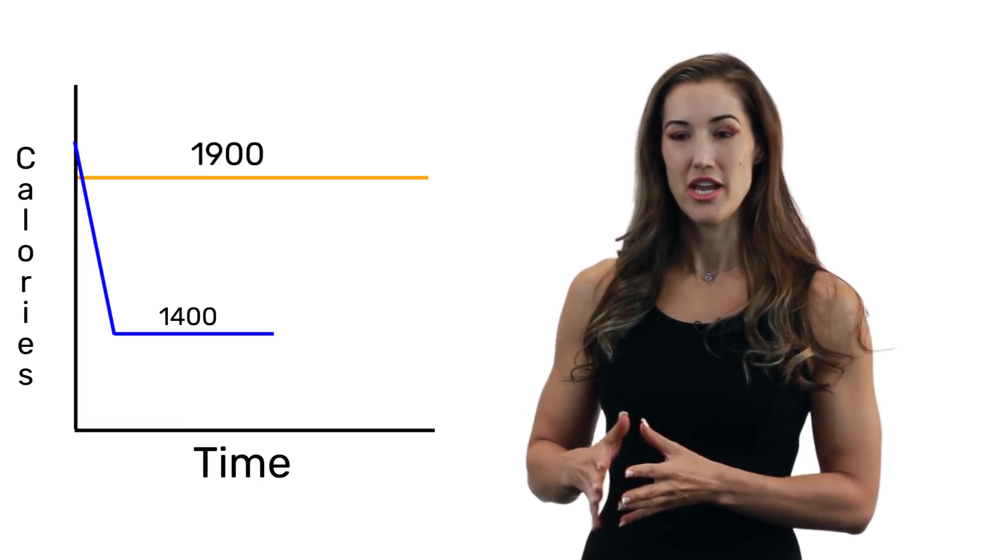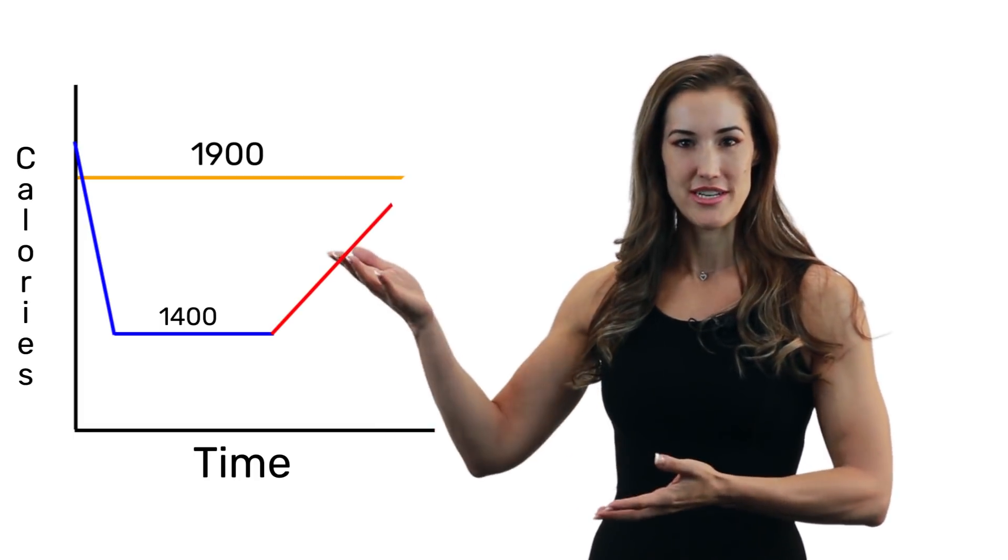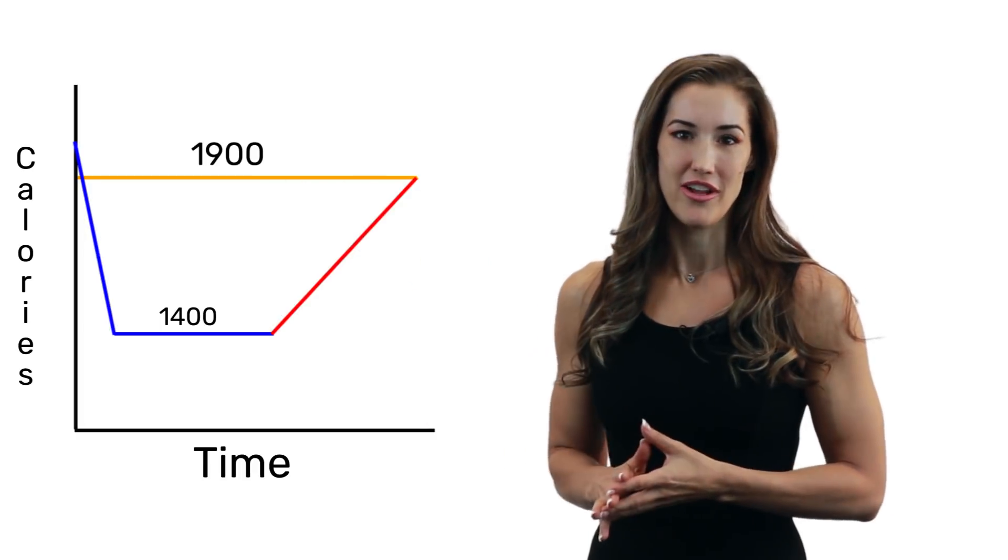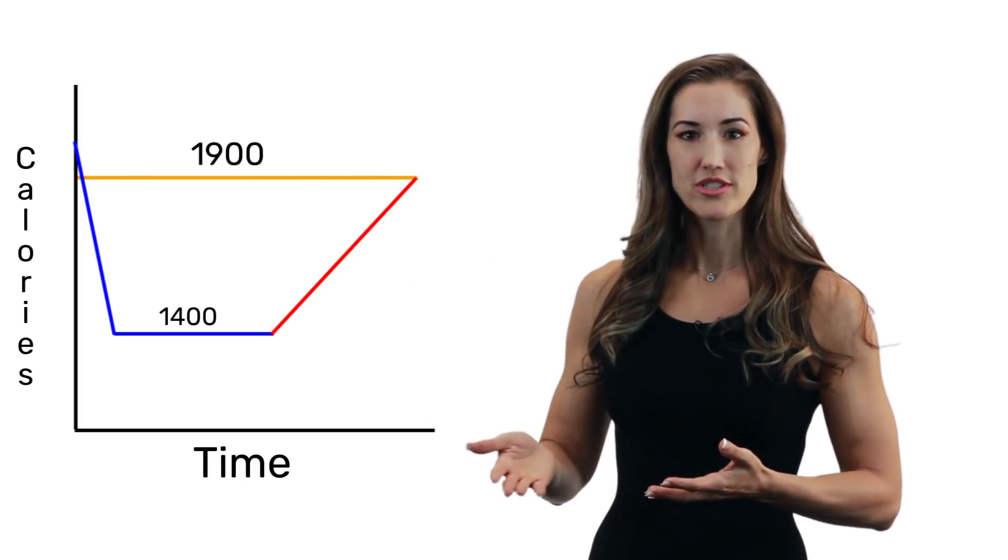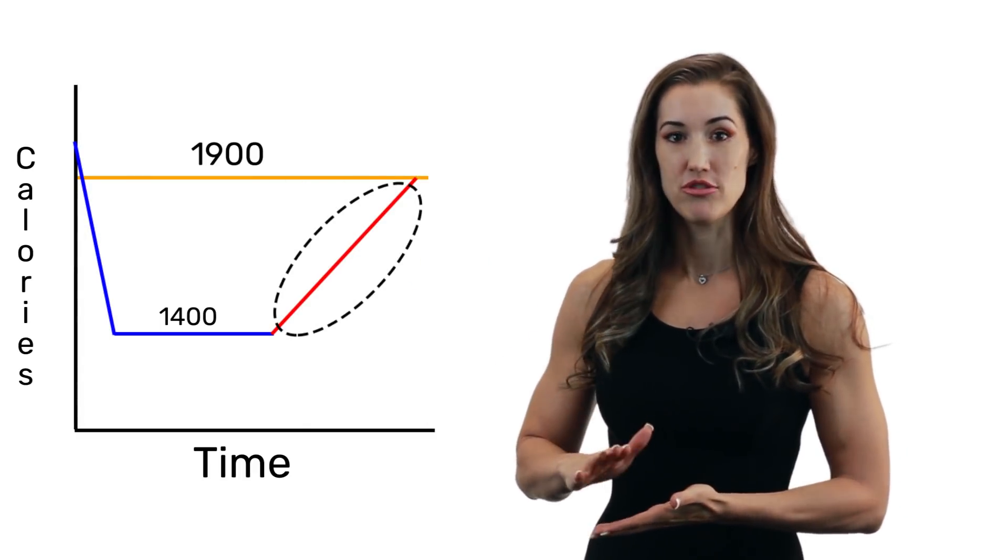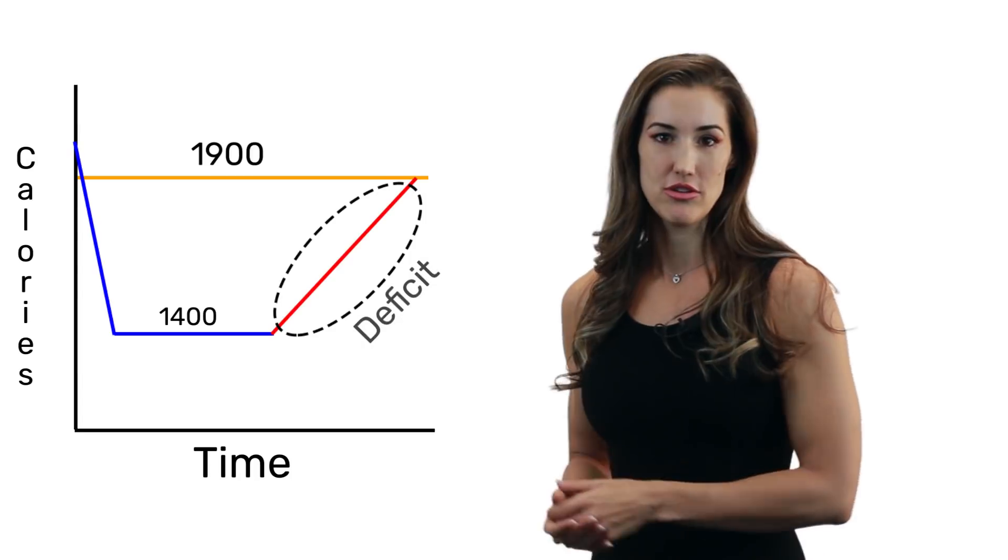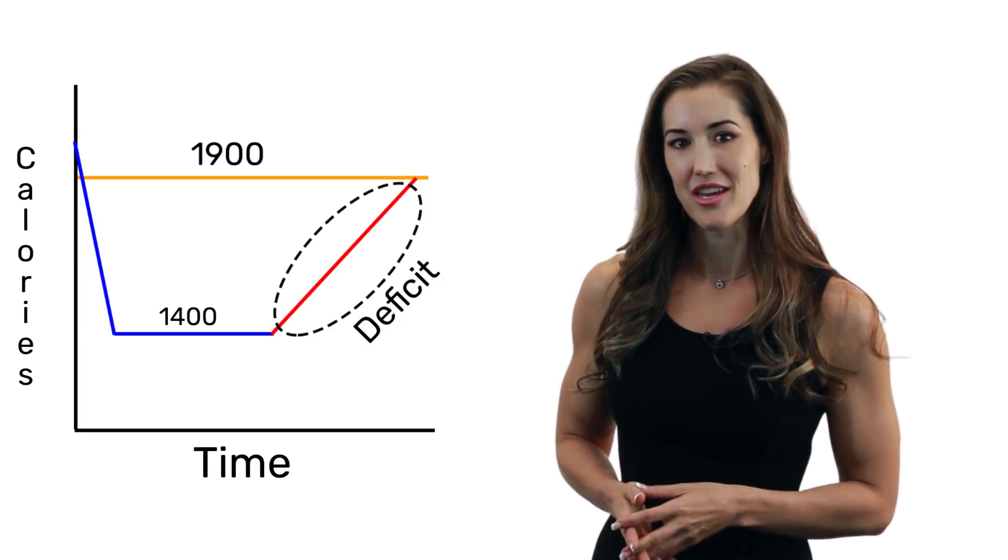But if you start a reverse without jumping your calories up first, and you start from that 1,400 with just, let's say, a 50-calorie increase, you're still going to be in a pretty big calorie deficit. So it might take you more than a month or two to finally get your calories up to where you're at maintenance level again. So throughout that whole time between the end of your diet when you started your reverse and the month or two that it takes to get back up to your maintenance calories, you'll be continuing to lose weight, just like you did while you were on the diet.